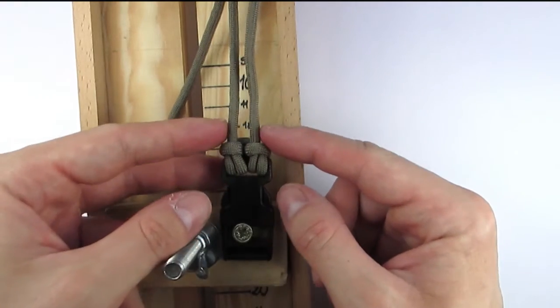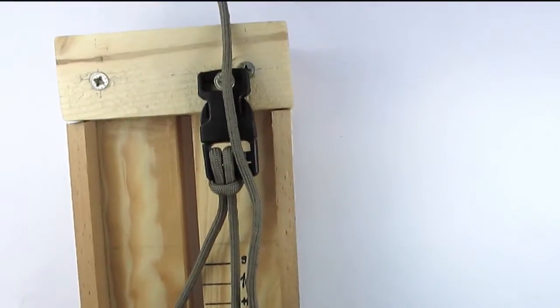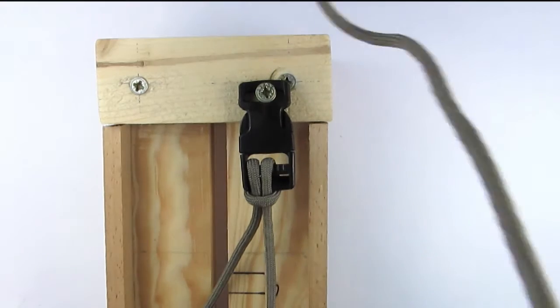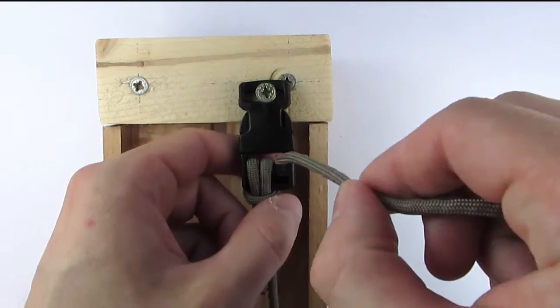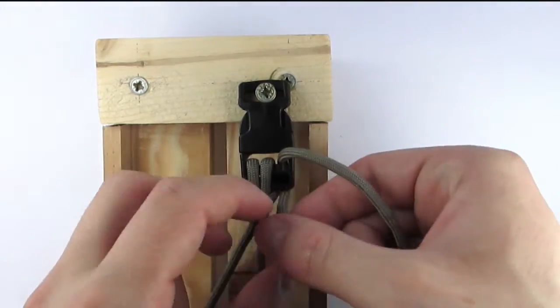With this done, we can now move on to the last cowhitch, which is made from the middle towards the right. And with this, we have completed tying our cord.